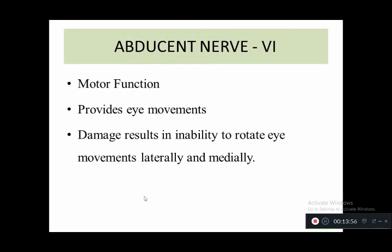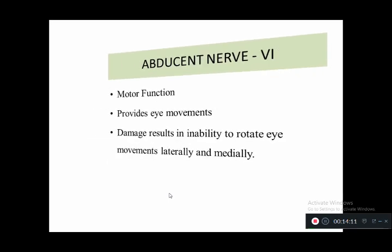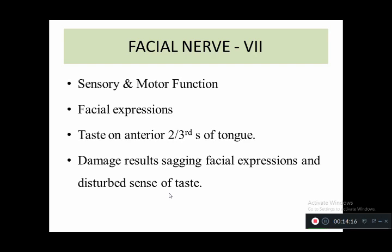The sixth cranial nerve is the abducens nerve. It is a motor function nerve providing eye movement, and damage results in inability to rotate the eyes laterally or medially. The seventh cranial nerve is the facial nerve. It has dual sensory and motor function. Facial expression is its main responsibility, and it also provides taste sensation to the anterior two-thirds of the tongue. Damage results in sagging facial expressions and disturbed sense of taste.